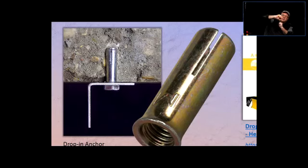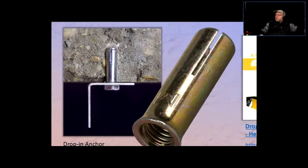You drill the hole, then put the anchor in using an attachment that lets you hammer it so that part expands in the hole and stays. Then you can drive a bolt or threaded rod into it — whatever the situation calls for. For bigger jobs, there are quick lock-and-load attachments where you get the drill bit, drill the hole, swap to the reamer attachment, and it rams the anchor in.